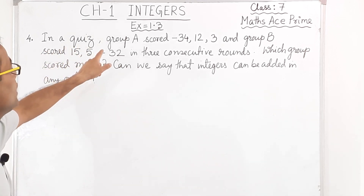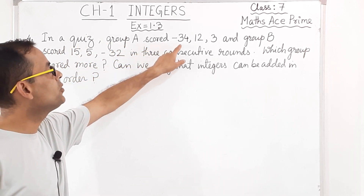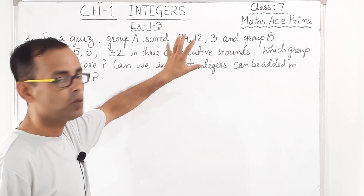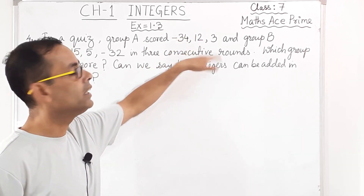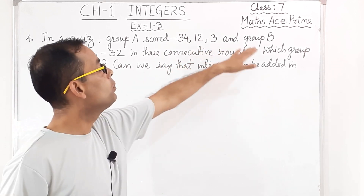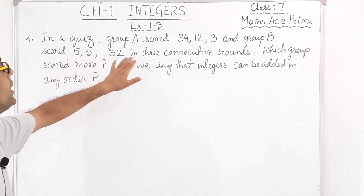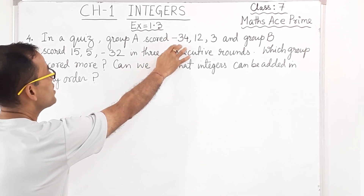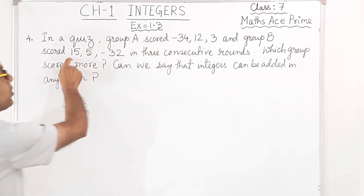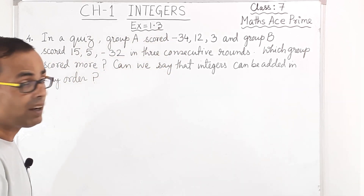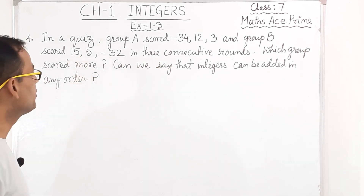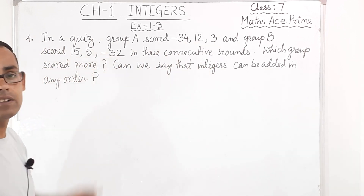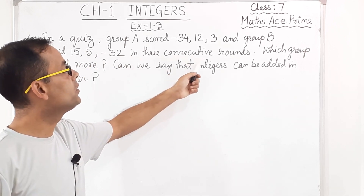They have asked us to find out: in a quiz, Group A scored minus 34, 12, and 3 — that means Group A is scoring minus 34 in one round, then 12 in another round, and 3 in another round, so 3 rounds. And Group B scored 15, 5, and minus 32 in 3 consecutive rounds. In the first round Group A scored minus 34 and Group B scored 15; in the second round Group A scored 12 and Group B scored 5; and in the third round Group A scored 3 and Group B scored minus 32.